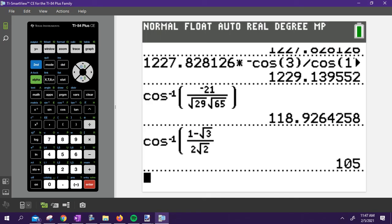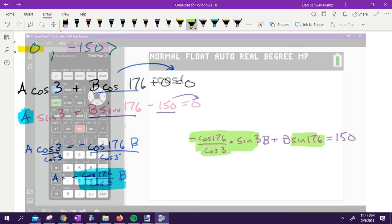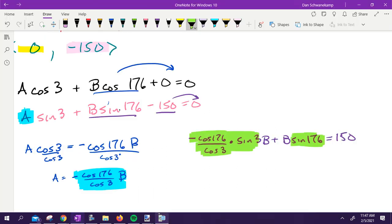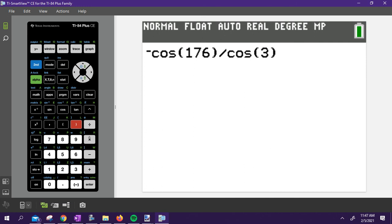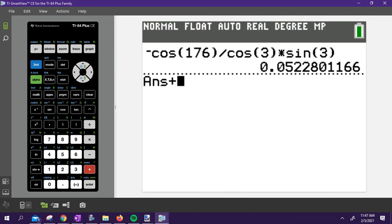So in my calculator, I'm going to take negative cosine, make sure you're in degrees or otherwise this won't work, negative cosine 176, close my parentheses, divided by cosine of three, close my parentheses. So I took these two, oh yeah, I got to multiply by sine of three, times sine of three. That's my first number. And I'm going to add to that this, plus sine of 176.